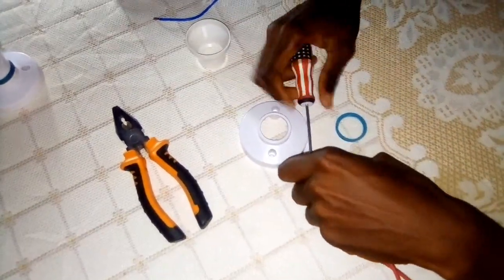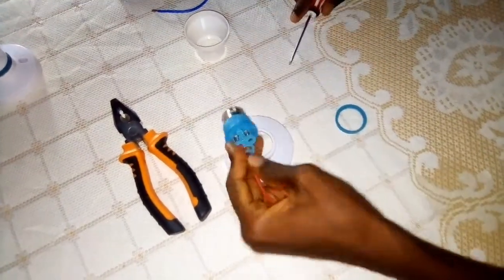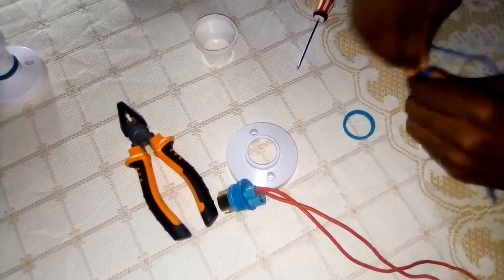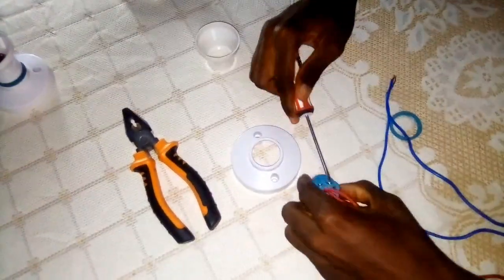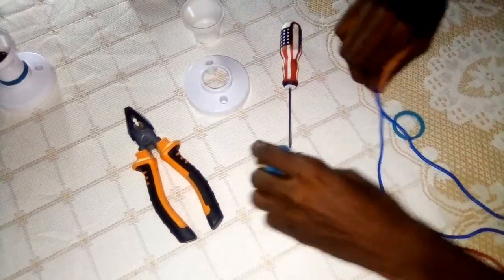I'm going to fix the two blue cables in the second termination of the lamp holder. This cable represents the neutral.